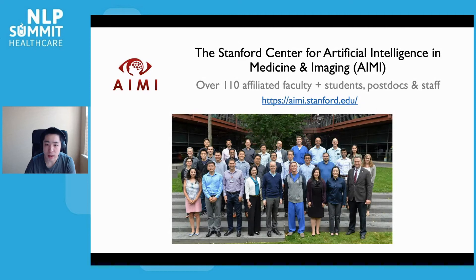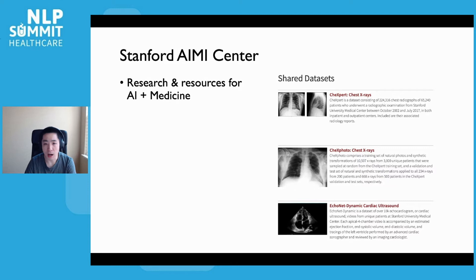The second group that has made the Stanza biomedical and clinical packages possible is the Stanford Center for Artificial Intelligence in Medicine and Imaging, or the AMI Center. Stanford AMI Center is a big interdisciplinary research group with over 100 affiliated faculty members and many students, postdocs, and research staff. You can check out more information at ami.stanford.edu. The AMI Center focuses on research at the intersection of AI and medicine, including creating shared resources such as Stanza's biomedical packages.